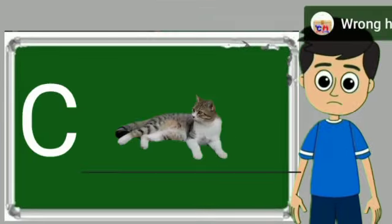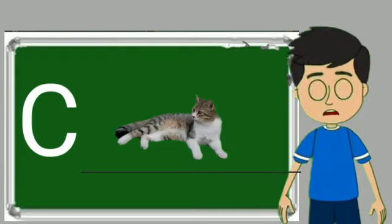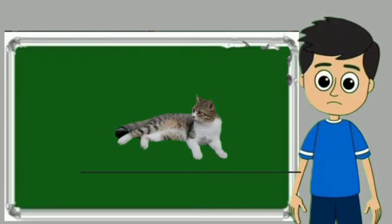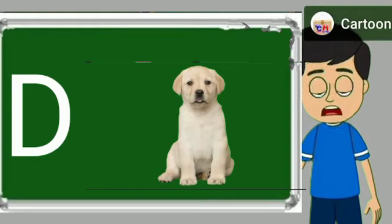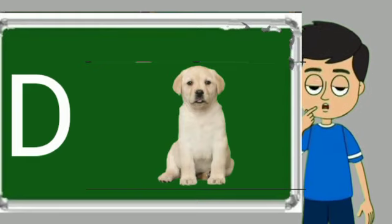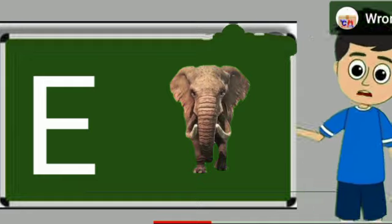C for cat. Cat means billy. D for dog. Dog means kutta.